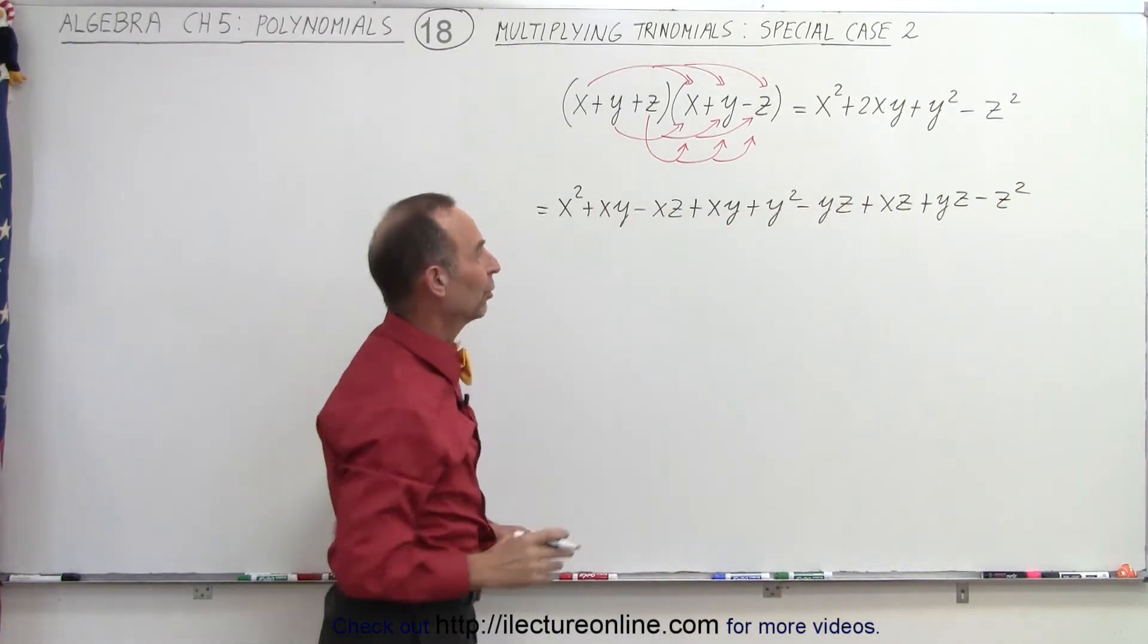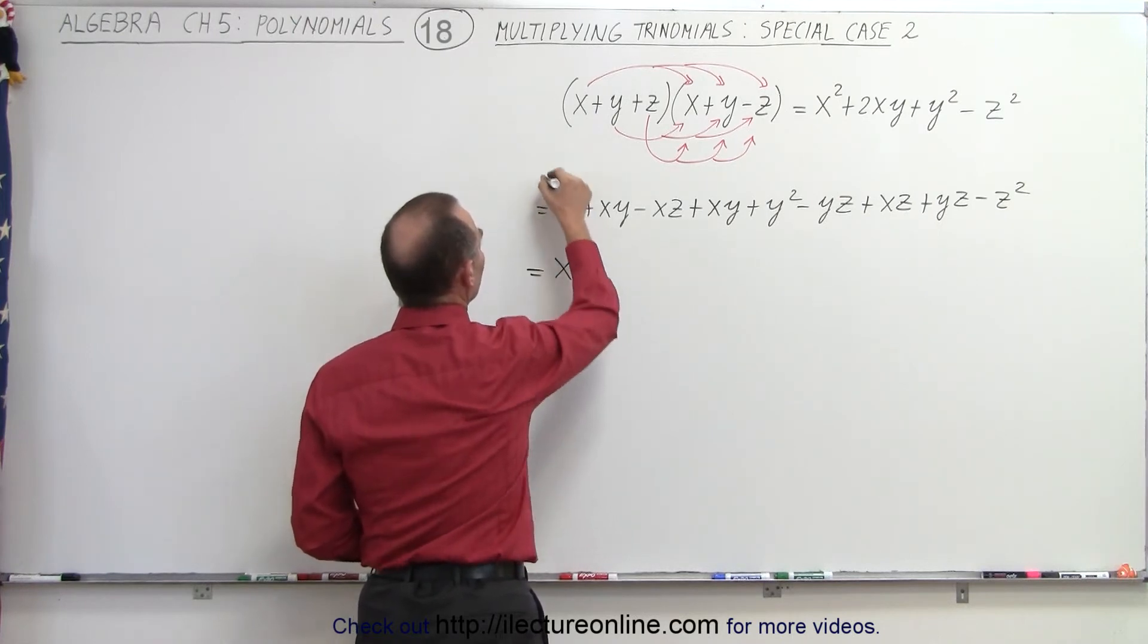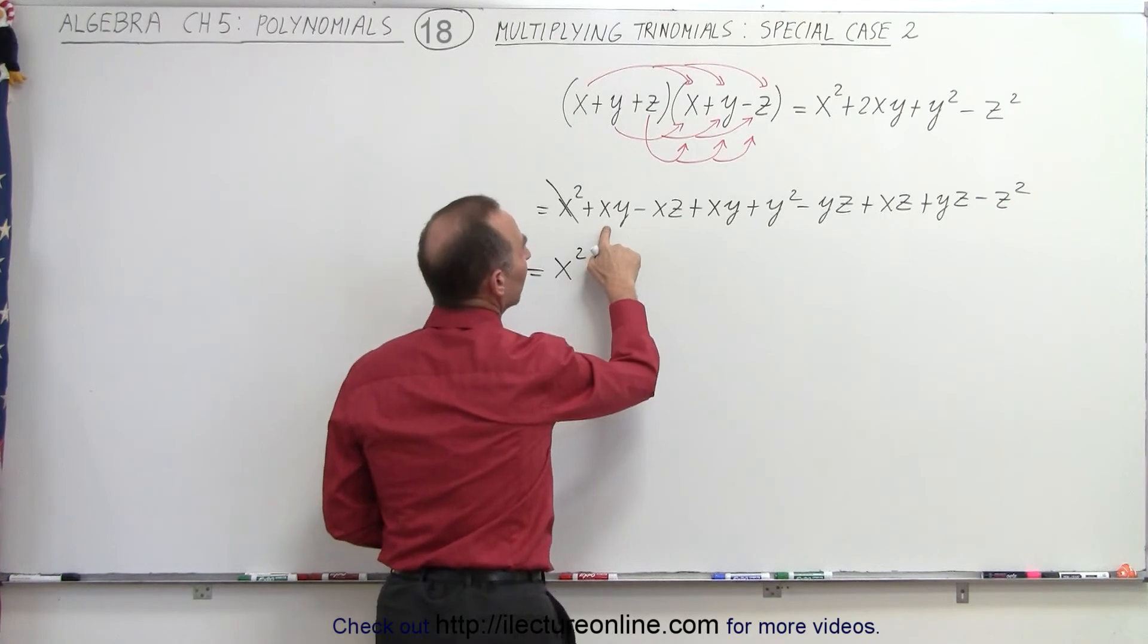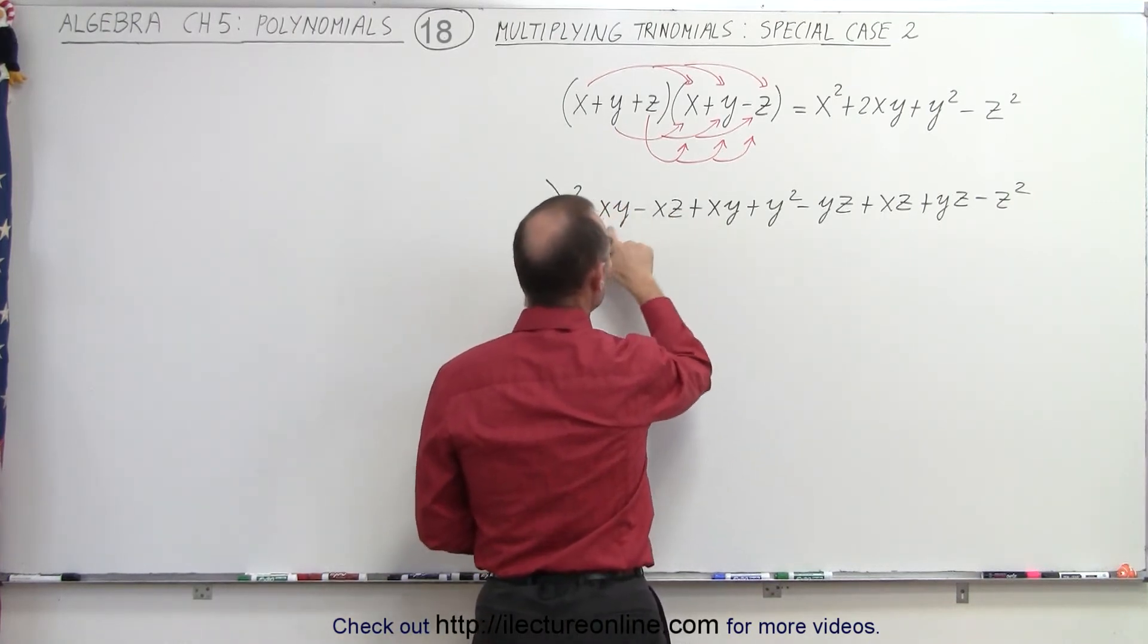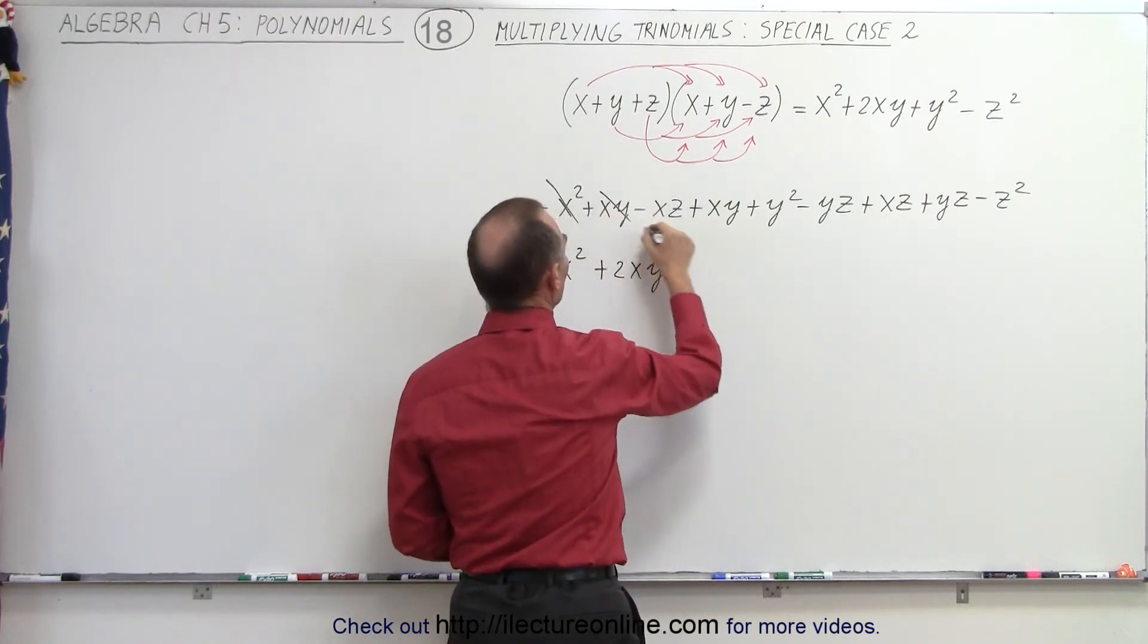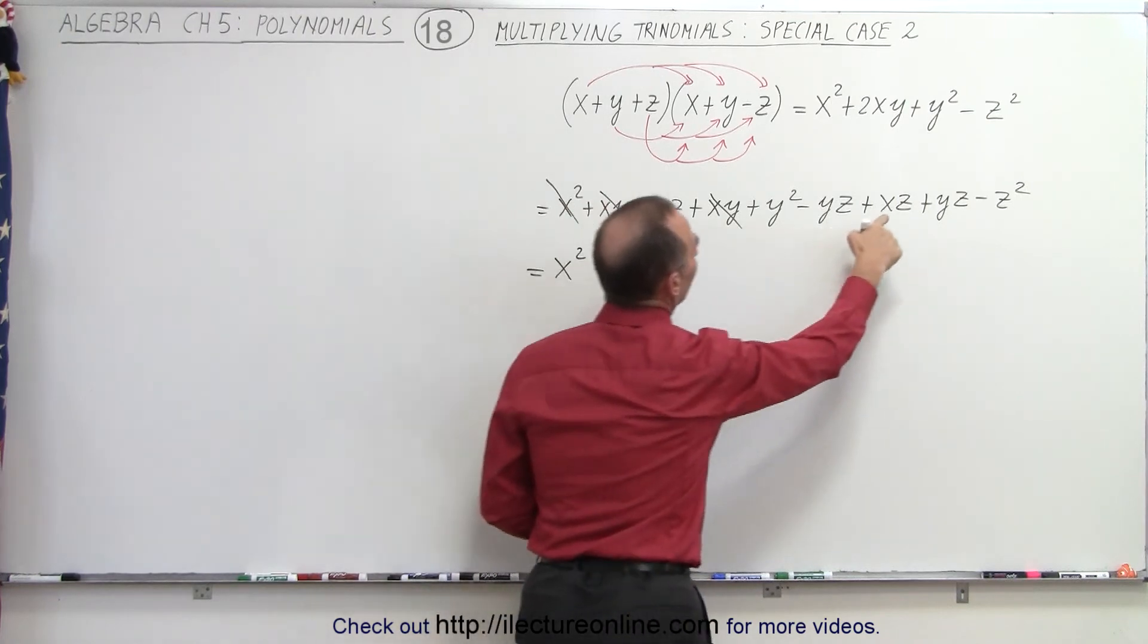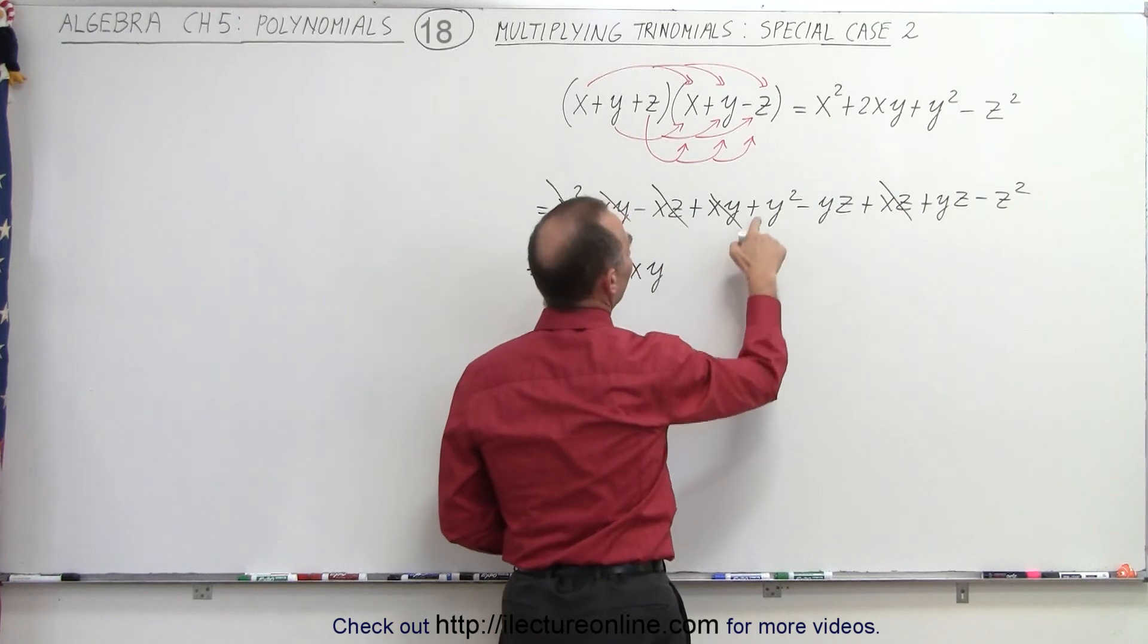Now let's combine like terms and see what we get. So we have x squared, we'll put a line through it because we already have that one. Then we have plus xy and plus xy, so that would be two of them, so that gives us plus 2xy. Then we have a minus xz and a plus xz, so they cancel out.